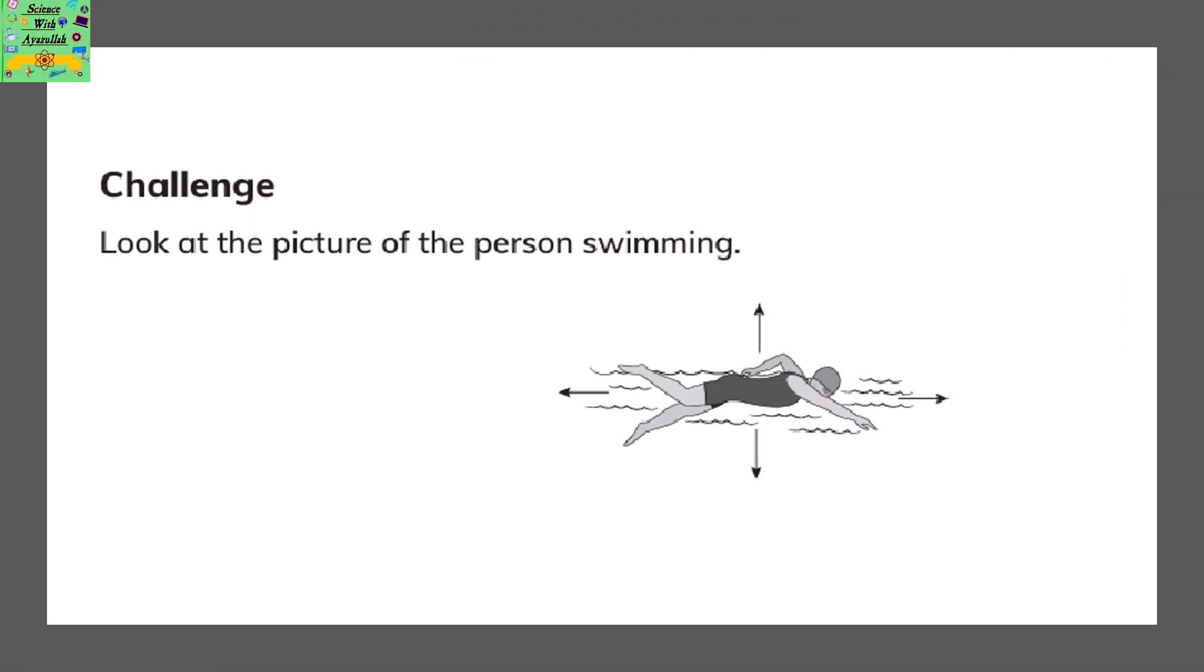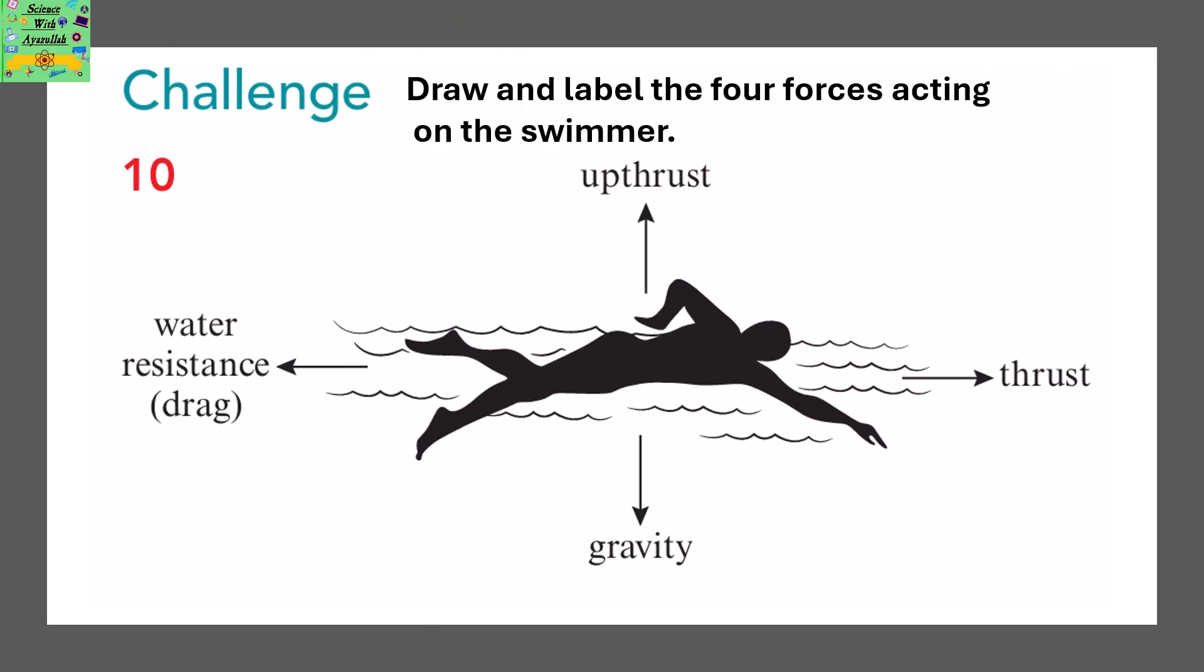Look at the picture of the person swimming. Draw and label the 4 forces acting on the swimmer. The 4 forces are upthrust that is keeping it afloat, gravity that is pulling it downwards towards the earth, thrust that goes in the direction of the swimmer, and water resistance or drag that pulls the swimmer backwards.